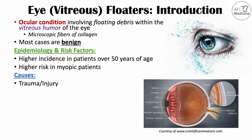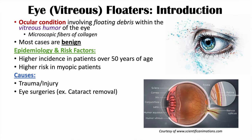What are some of the causes of vitreous floaters? One cause is trauma or injury — a strike to the eye can cause damage within the vitreous humor that leads to debris of collagen. Another cause is eye surgeries; for example, cataract removal can be a cause of floaters in some patients.